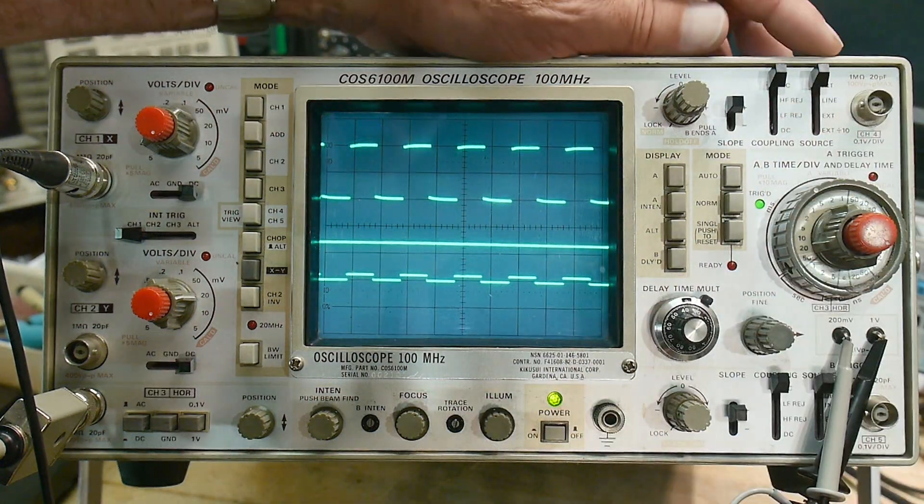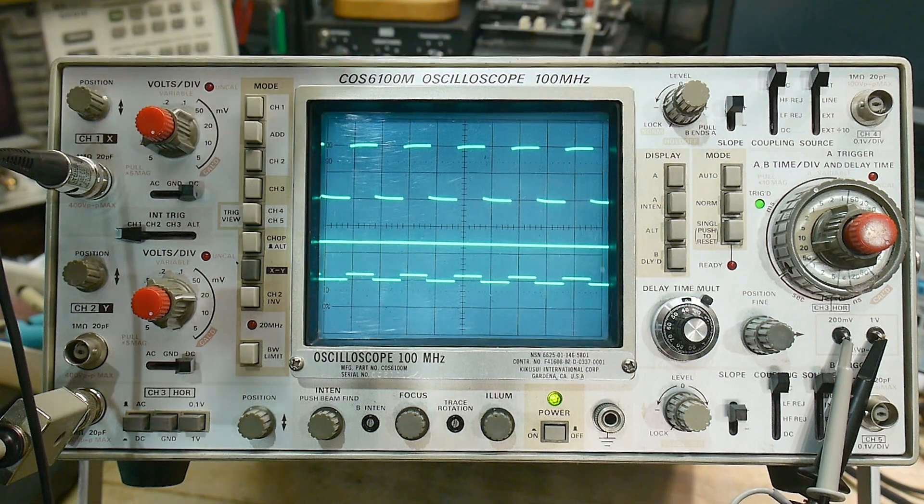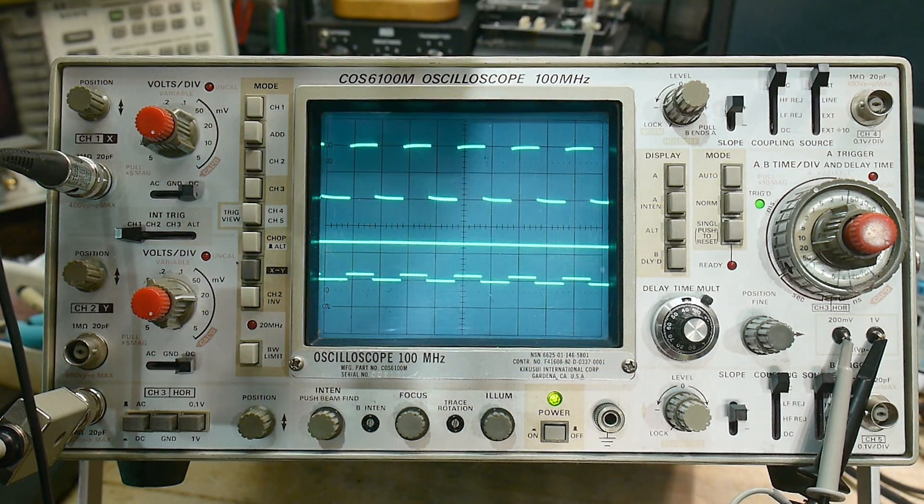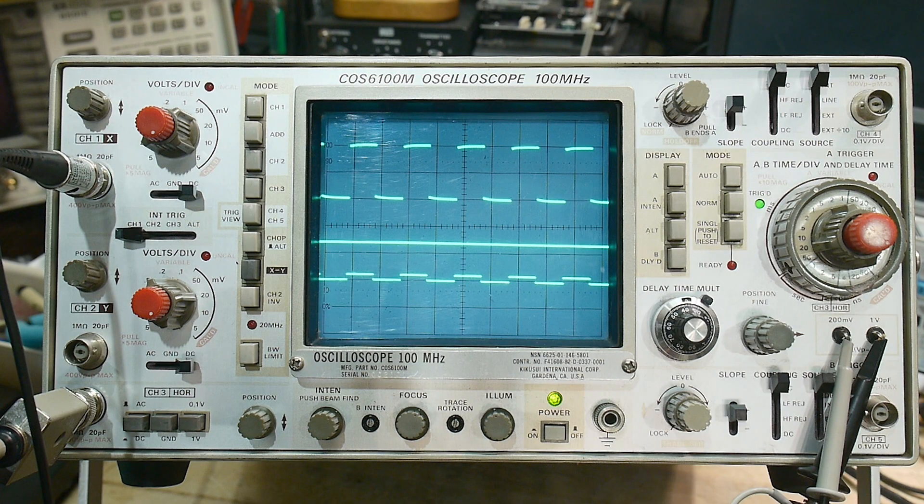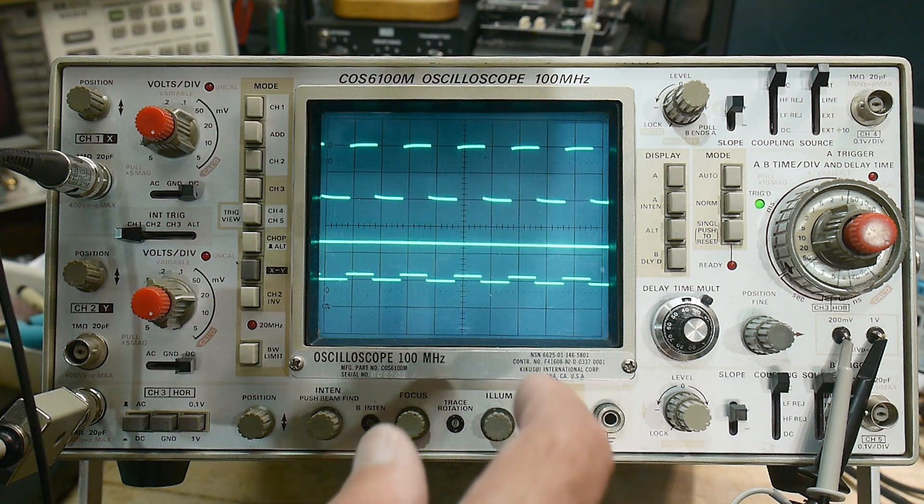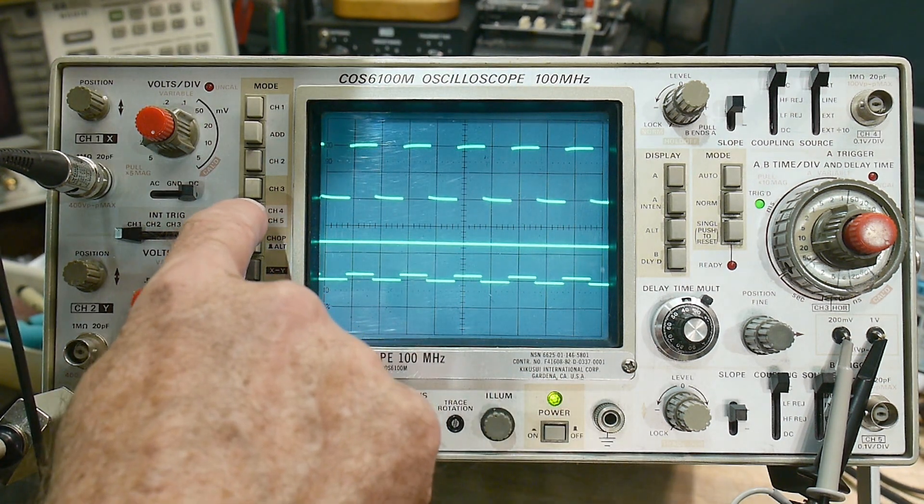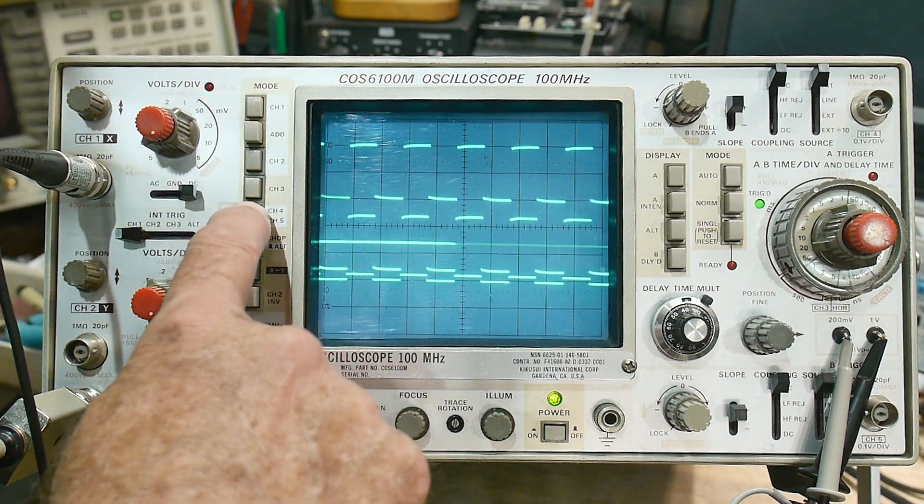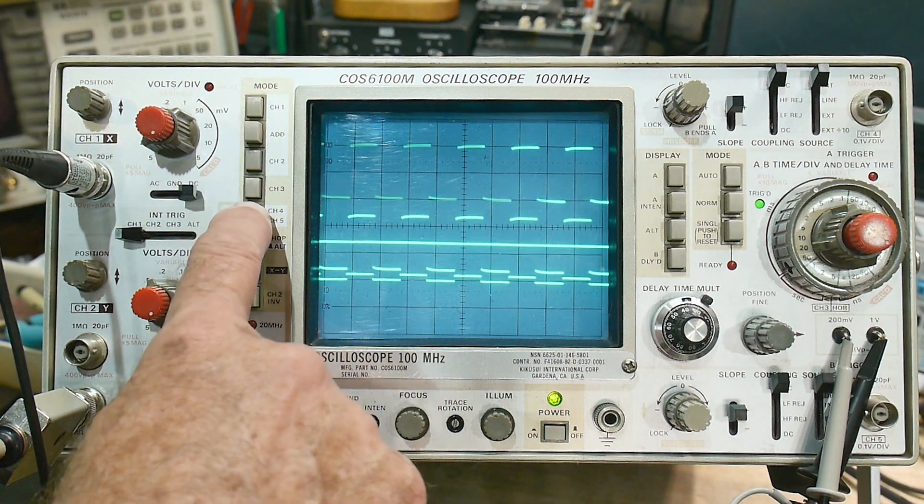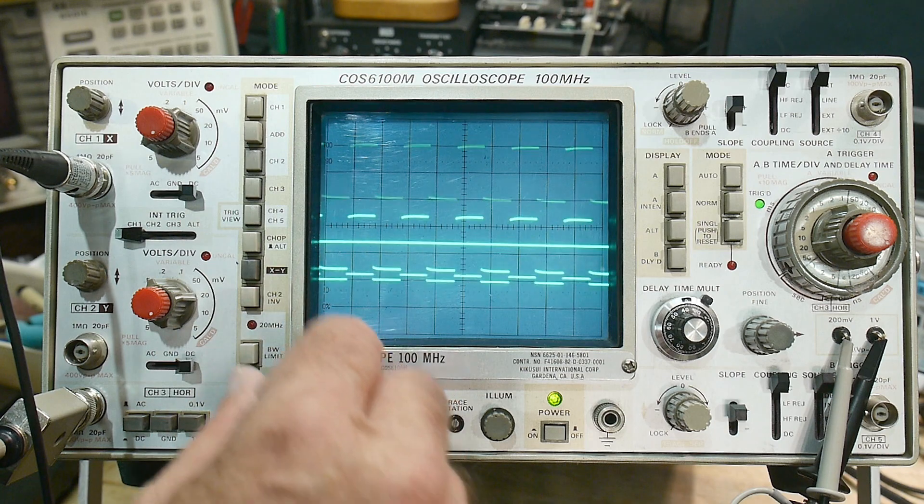Well, triggering is over here, I have it set to internal triggering. And on most scopes, that's as far as you go, but this scope, you can hit channel four, which is trigger view. All right, so let me turn off, let me move channel three down here, I'm going to channel two way down here.